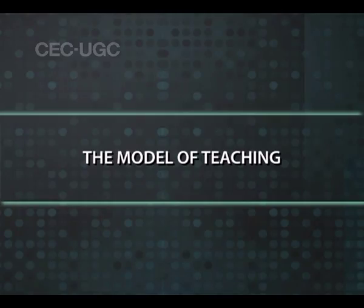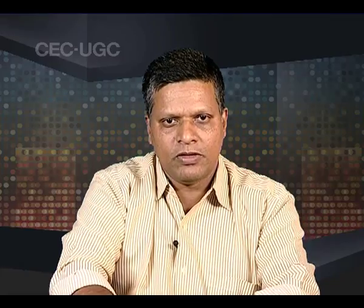Now we shall move on to the model of teaching. This model is based on the principles of Piagetian theory of cognitive development. You first give tasks to students to determine the cognitive development stage of each child, and once determined, you teach using the model with the following aspects. Syntax stands for the various phases in a model; the syntax of this model consists of three phases.